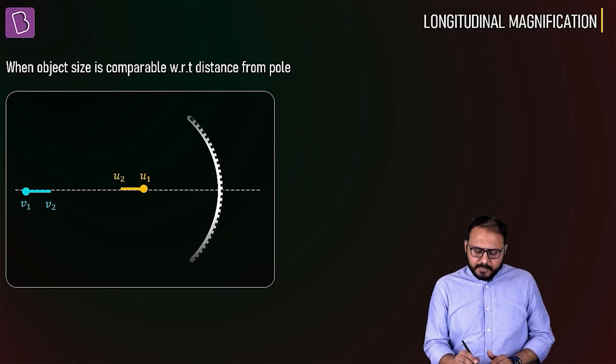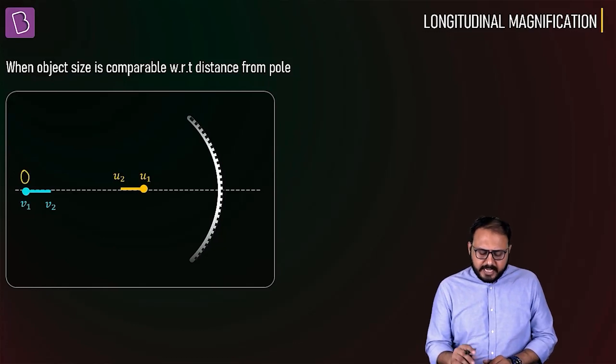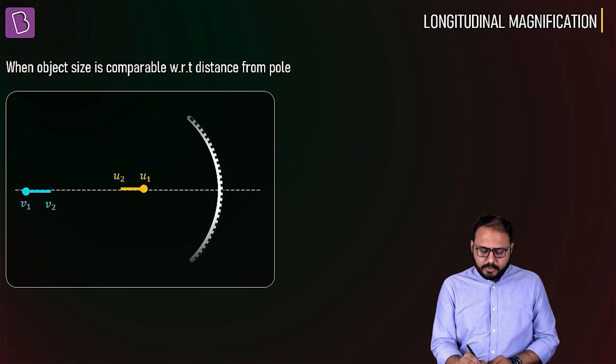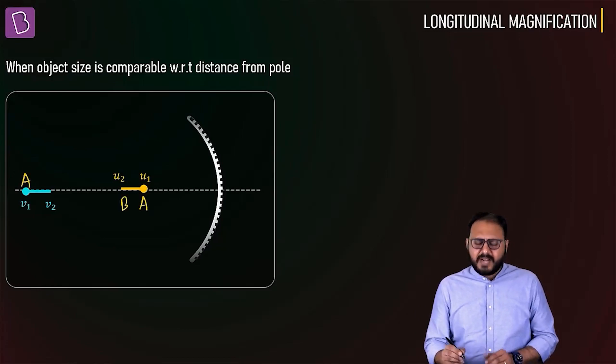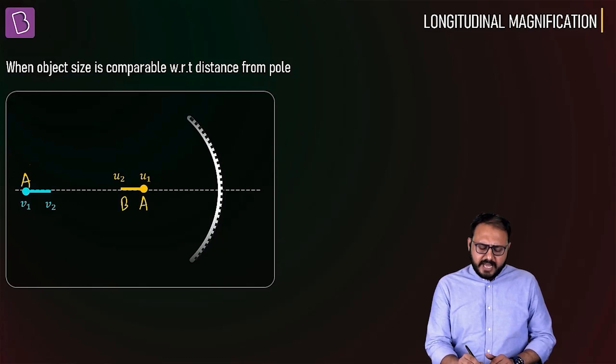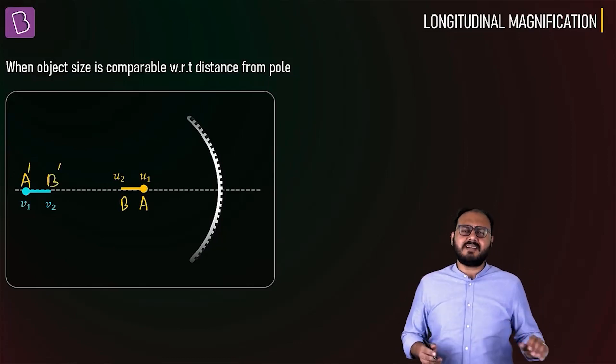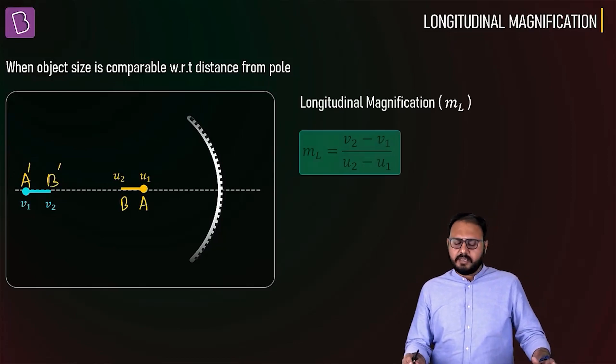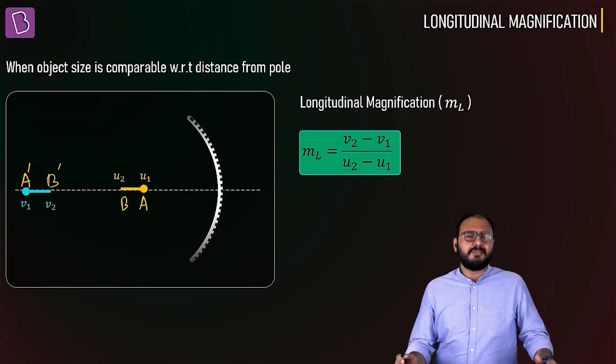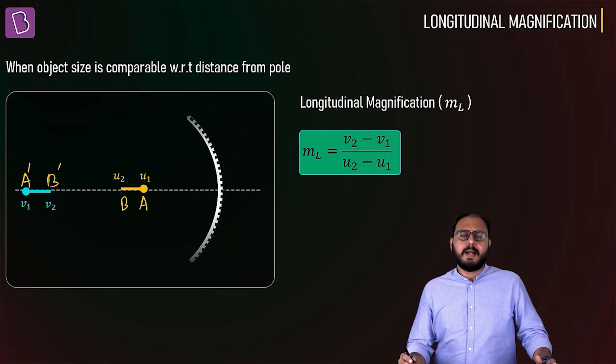The brute force thought is very simple. Basically your object is AB. So find the image of A as A', find the image of B as B', and whatever the difference between them, that's the image length. Fair enough, not bad, but there is a problem.